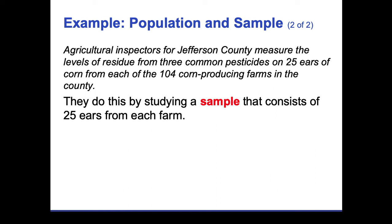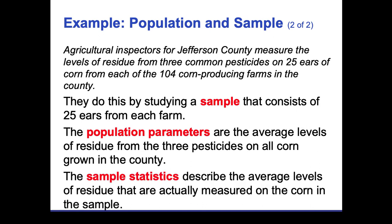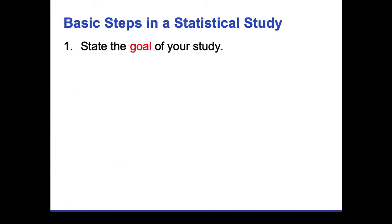The sample in this case is just 25 ears from each farm — inspectors probably walk in and randomly choose 25 ears to test for pesticides. The population parameters are the average level of residue from the three pesticides on all corn grown in the county, based on the average levels found in the sample. Statistics is designed to take characteristics of something you're trying to describe and use a smaller sample from a giant population.